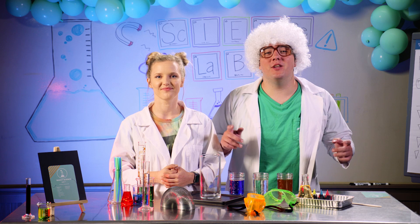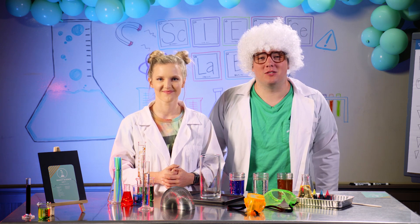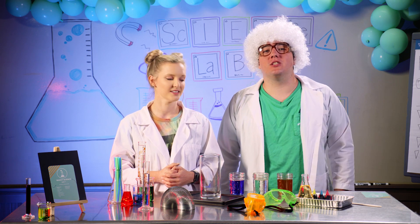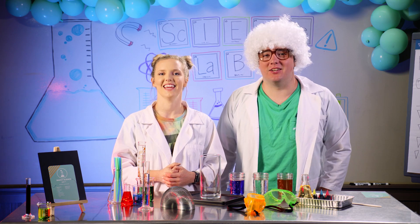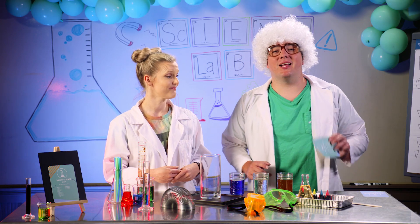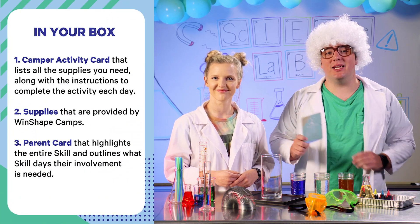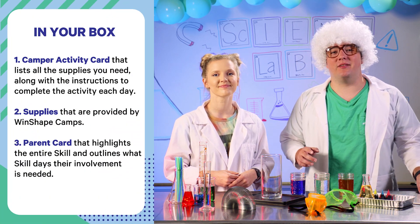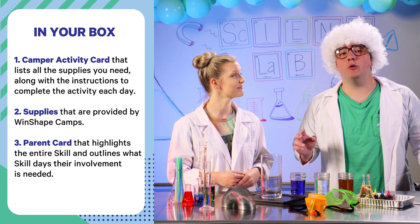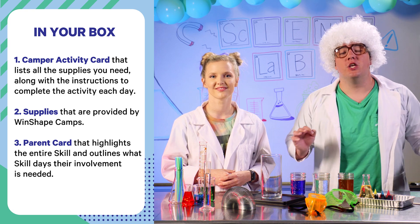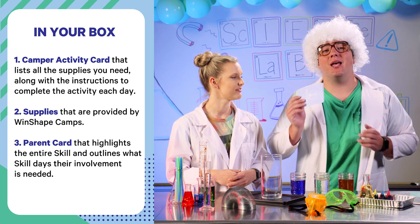You may have noticed that you received boxes with some supplies. One of your boxes should signify the wacky science skill. In this box, you will find a few important things. First, you will find a camper instructional card that lists the supplies you need and the steps to complete each activity. Second, you will find a few supplies for the activities. And third, you will find a parent card.